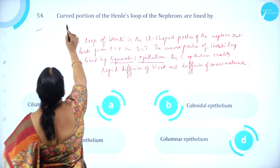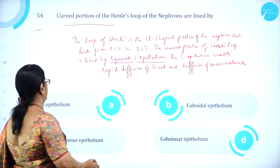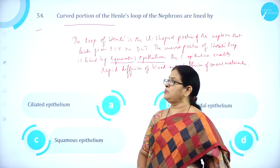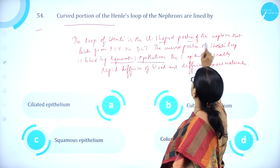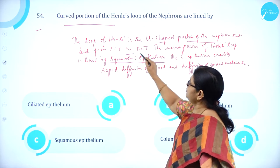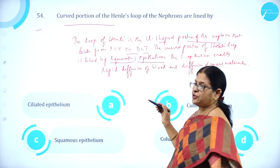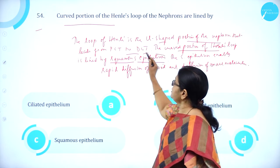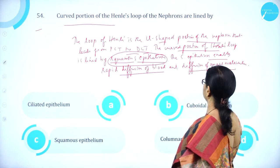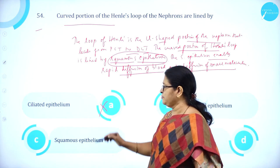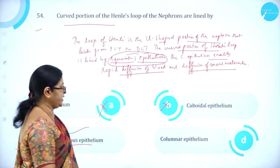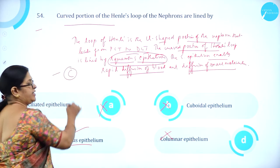Moving on to question number 54. The curved portion of Henle's loop of the nephron is lined by which epithelium? The loop of Henle is the U-shaped portion of the nephron leading from the proximal convoluted tubule (PCT) to the distal convoluted tubule (DCT). The curved portion is lined by squamous epithelium, which enables rapid diffusion of blood and small molecules. Option C, squamous epithelium, is correct.